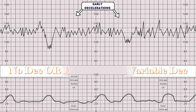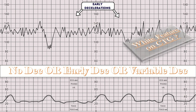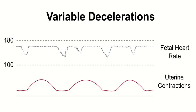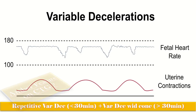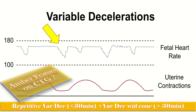On CTG, when we have no low decelerations, early decelerations, or variable decelerations that are not evolving to have concerning characteristics, those are included among the white features. When we have repetitive variable decelerations with any concerning characteristics for less than 30 minutes, or variable decelerations with any concerning characteristics for more than 30 minutes, or repetitive late decelerations for less than 30 minutes, those are amber features.